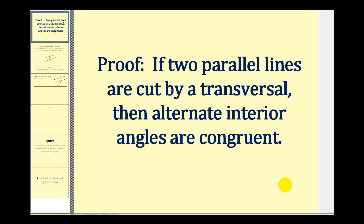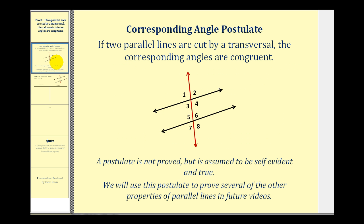Welcome to a proof of the theorem: if two parallel lines are cut by a transversal, then alternate interior angles are congruent. This is usually one of the first proofs after the corresponding angle postulate has been given, which tells us that if two parallel lines are cut by a transversal, the corresponding angles are congruent.